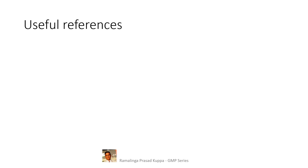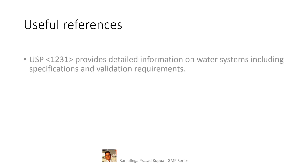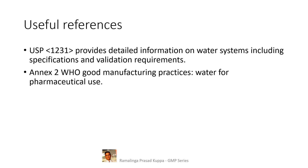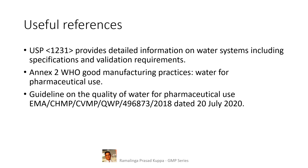Some useful references are provided. USP Chapter 1231 provides detailed information on water systems, including specifications and validation requirements. Annex 2 of WHO Good Manufacturing Practices — Water for Pharmaceutical Use, and the Guideline on Quality of Water for Pharmaceutical Use, EMA/CHMP/CVMP/QWP/496873/2018, dated 20 July 2020, are also key references.